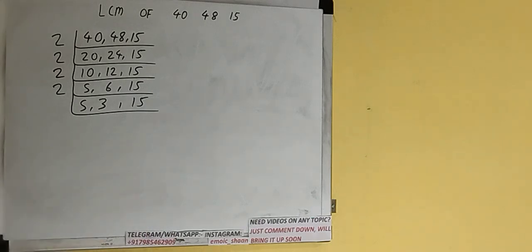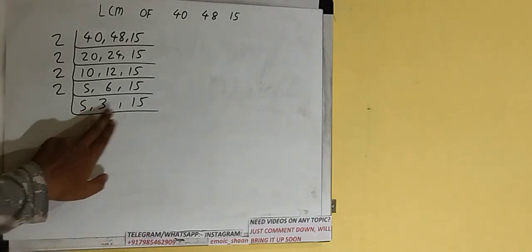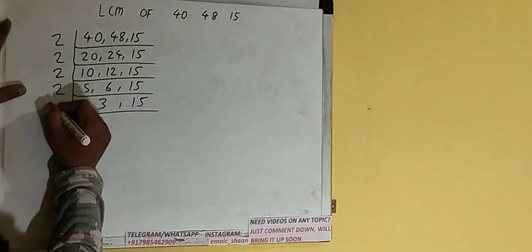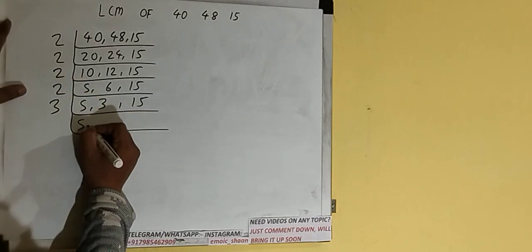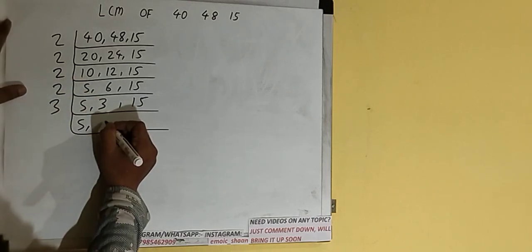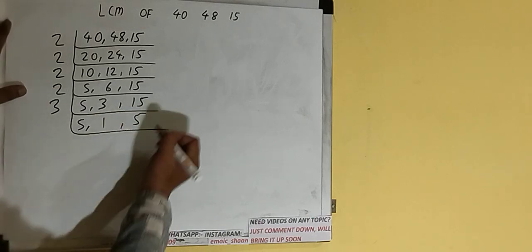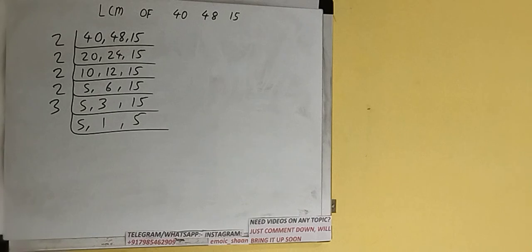So we check with the next lowest prime number, which is 3. The second and the third numbers are divisible by 3, so we divide: the first number remains the same, the second becomes 1, and the third becomes 5. Now none of the numbers are divisible by 3 either.